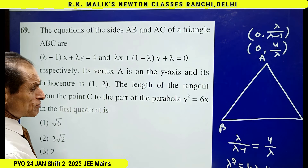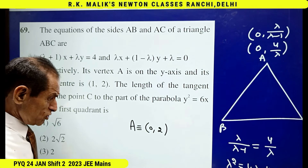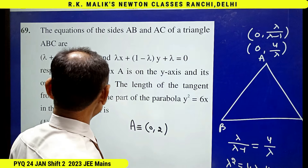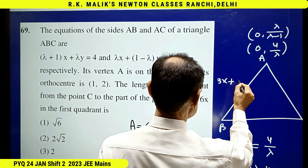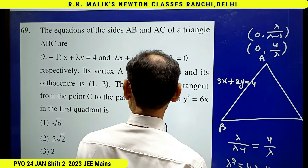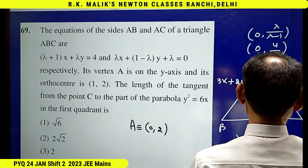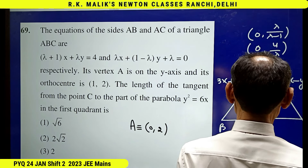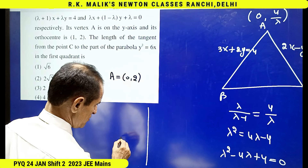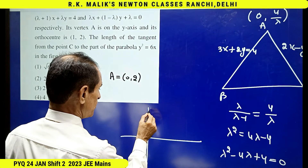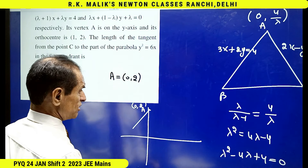Hence, substituting lambda equal to 2 into the equation of AB gives 3x plus 2y equal to 4. And putting lambda equal to 2 into the equation of AC gives 2x minus y plus 2 equal to 0.